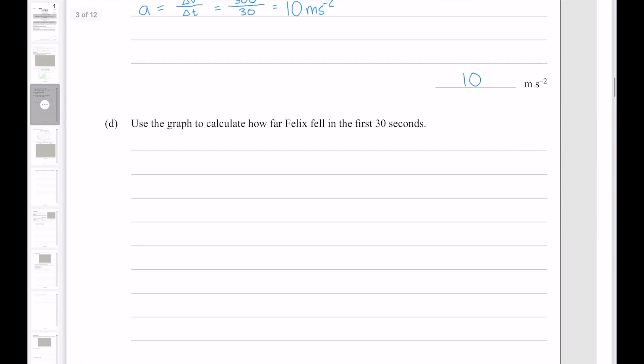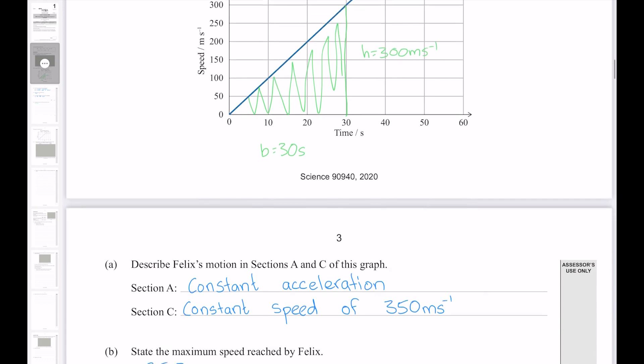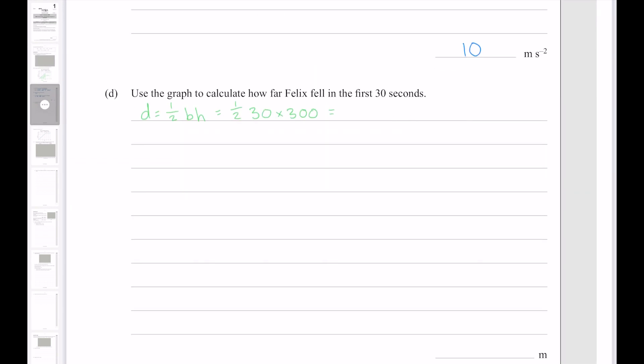The equation for the area of a triangle is half base times height, where our base is at 30 seconds, and our height is 300 meters per second. And that gives me 4,500 meters.